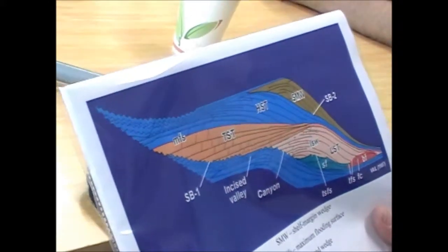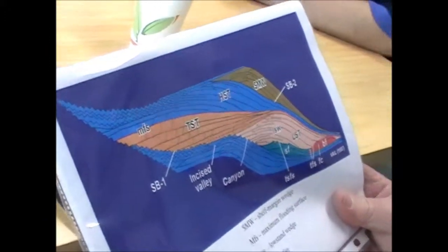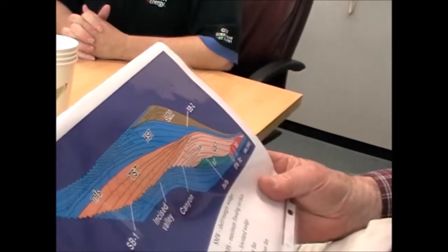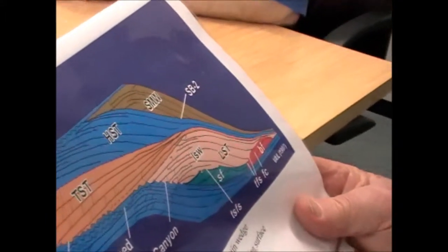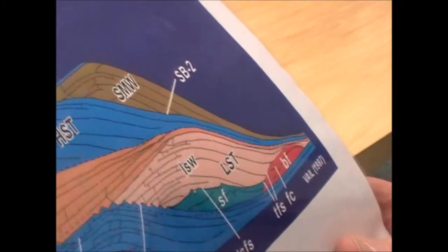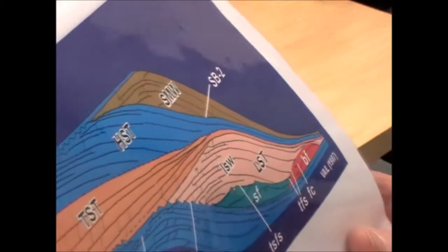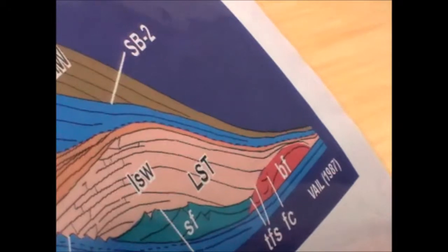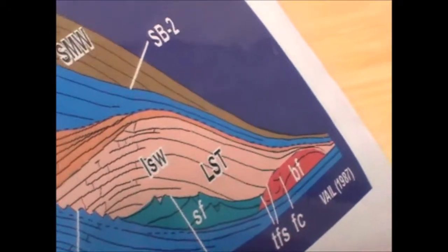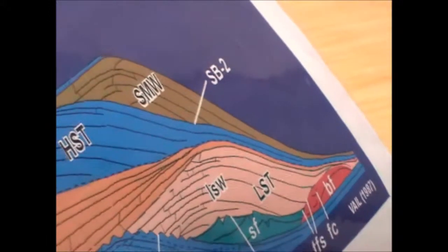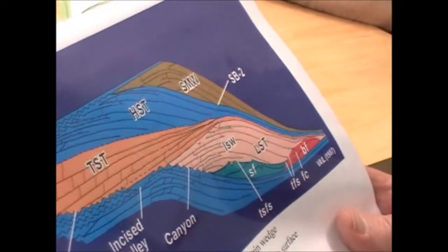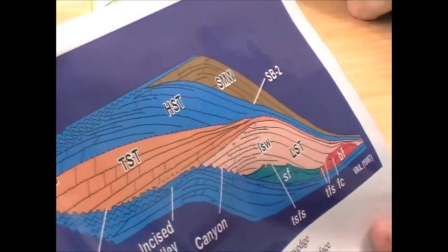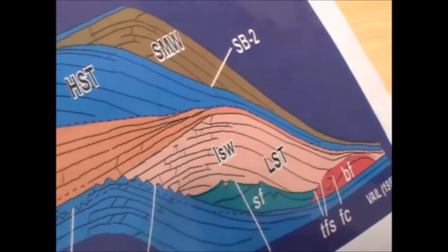As we worked out into the basin more, we identified — in fact this was in offshore England, in the North Sea — we could identify these large mounds that you see there in red, in the base. These mounds typically had the thin downlap draped over the top, or a downlap over the top. And you could tell from the clinoforms that they were deepwater deposits.